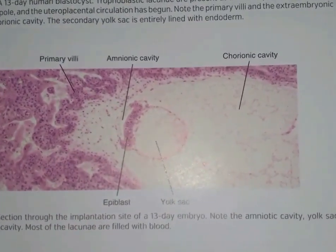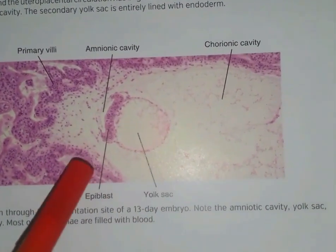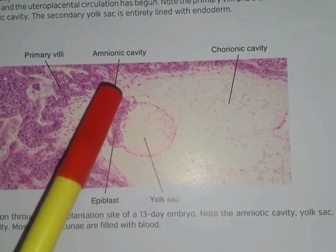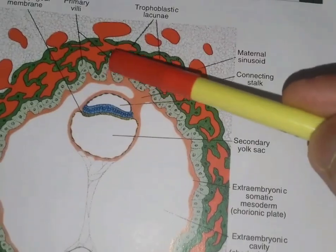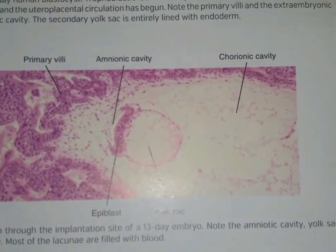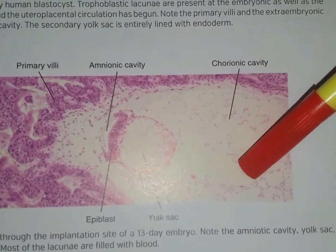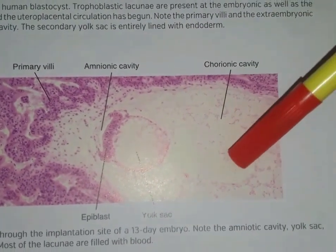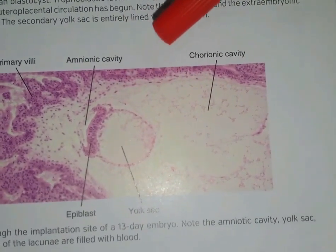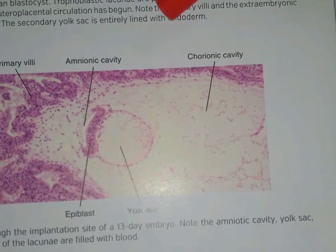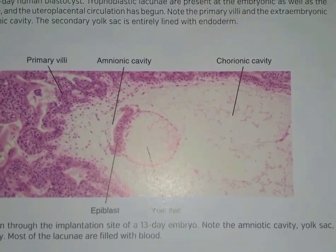In this picture you can see a 13-day embryo. The yolk sac is visible, as is the epiblast, the amniotic cavity, and the primary villi. This is the chorionic cavity, and somewhere here is the exocoelomic cyst. The extra-embryonic somatic mesoderm and extra-embryonic splanchnic mesoderm are not properly visible in this picture.